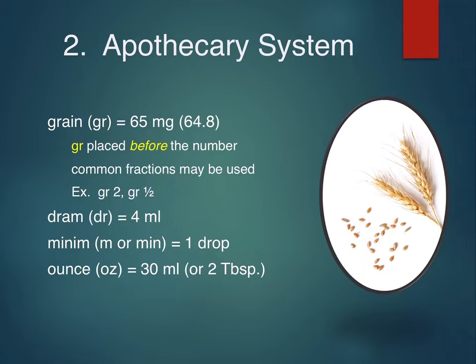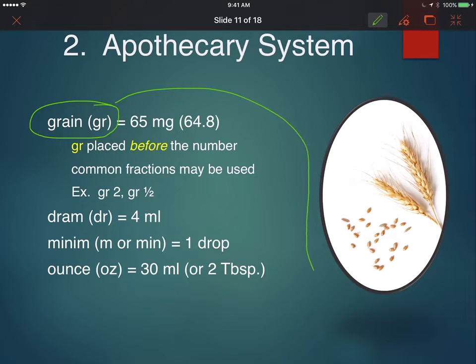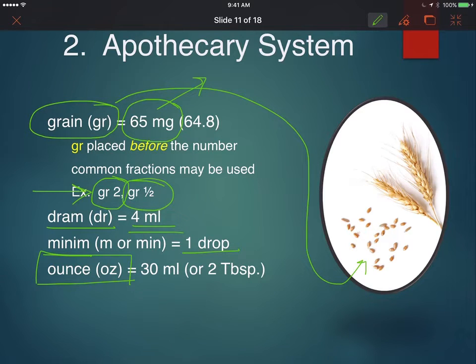The second system of measurement that we're going to be using is called the apothecary system. It's the grain, which is the basic unit of weight. A grain just happens to be equivalent to one grain of wheat. This shows you how old this system is. A grain just happens to be equivalent to about 65 milligrams, not exactly. When we're writing grain, make sure you put the GR before the number. You can also use fractions when we're looking at grains. Grain one half means a half of a grain. The DRAM is a volume unit of measurement that's equivalent to four mils. The minimum is equal to a drop. The fluid ounce is a unit of measurement which equals 30 mils or two tablespoons.